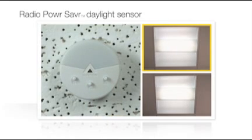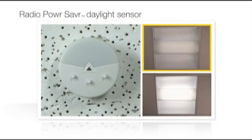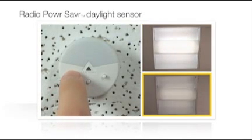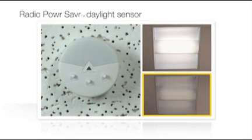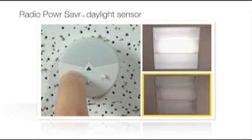That fixture will then go to 25% brightness, indicating that it is no longer part of the group for the Daylight Sensor. If that fixture should be controlled by the Daylight Sensor you're working with, tap LINK to move to the next fixture. When all fixtures have been properly grouped to the Daylight Sensor, press and hold the LINK button on the Daylight Sensor for 6 seconds.